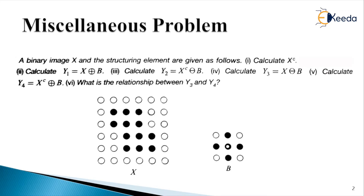For the first sub-question, we need to calculate X to the power C, the complement. Here we have a visualization of X, the given binary image. There are 12 pixels represented with complete darkness whereas the rest of the pixels are white. We have 6 rows and 6 columns, giving 36 pixels total. To find the complement, we make the white pixels black and the black pixels white.